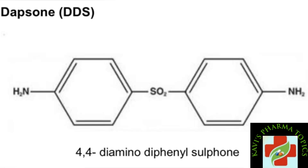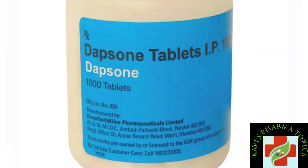Next, in the sulfone class, let's look at dapsone's chemical structure. Dapsone is a very important drug. Looking at the chemical structure, there are two amino groups present at the 4th position on each ring — so it is named 4,4-diaminodiphenyl sulfone.